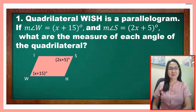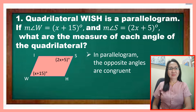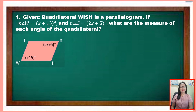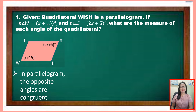What important concepts are needed to solve the problem? First, in a parallelogram, the opposite angles are congruent. Also, it is necessary to know that consecutive angles are supplementary. Using the first idea that opposite angles of a parallelogram are congruent, we can equate the given angles.